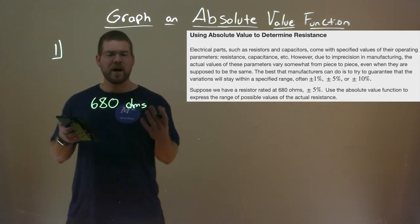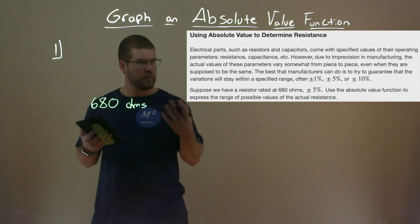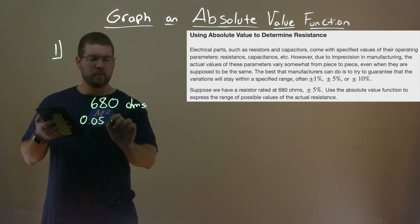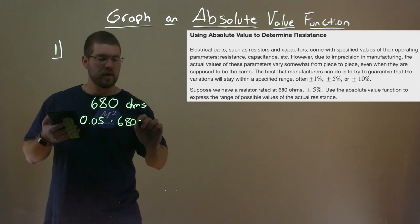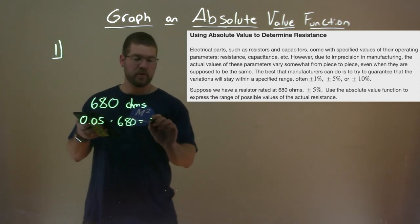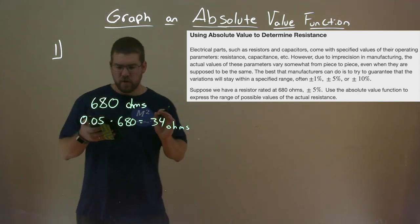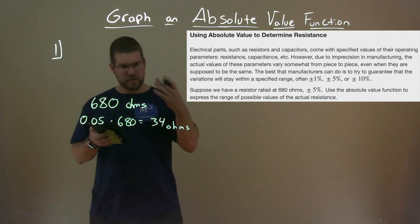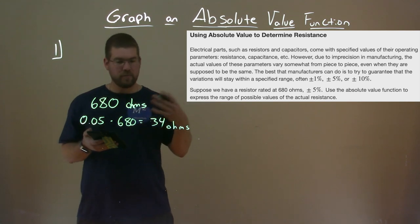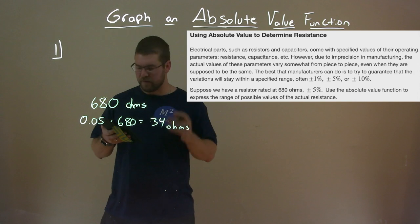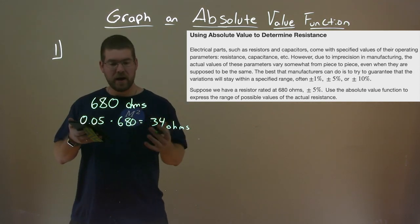So 680 ohms. Well, what's 5% of that? So it's plus or minus 5% we're looking at. So 5% or 0.05 multiplied by 680. What does that equal? And that is 34. So we have 34 ohms here. 34 ohms is 5% of 680. So if we want to have plus or minus that, we have to go that on both sides of it.